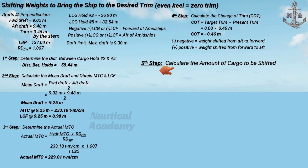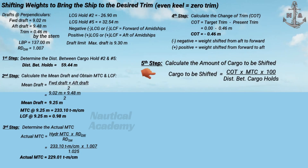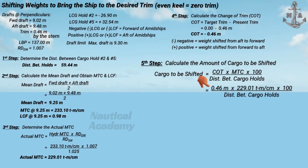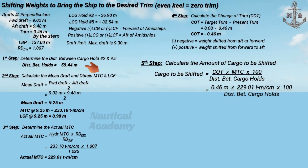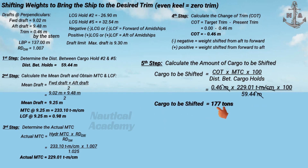Now let's calculate the amount of cargo to be shifted using the formula. For the change of trim, disregard the negative sign as it only indicates the direction of shifting. The actual MTC is used in this calculation. Since MTC is expressed in ton meters per centimeter, we multiply it by 100 to convert from meters to centimeters, then divide by the distance between cargo hold number two and cargo hold number five. The amount of cargo to be shifted is 177 tons from cargo hold number five to cargo hold number two.